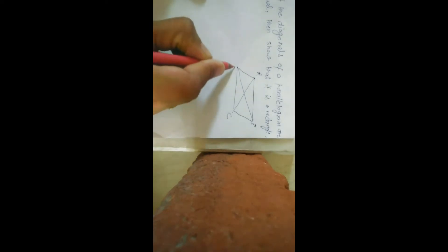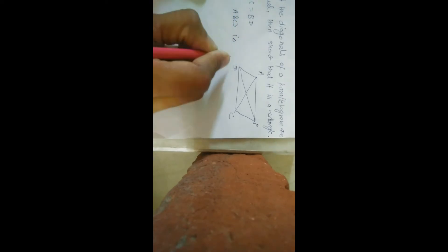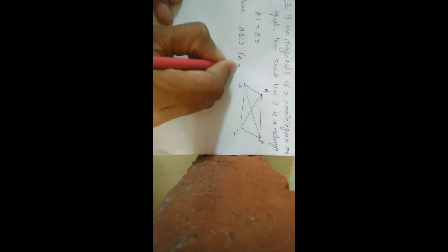First of all, we draw a parallelogram with diagonals. We have A, B, C, D. Let given parallelogram is ABCD, whose diagonals AC and BD are equal. AC is equal to BD. We have to prove ABCD is a rectangle.